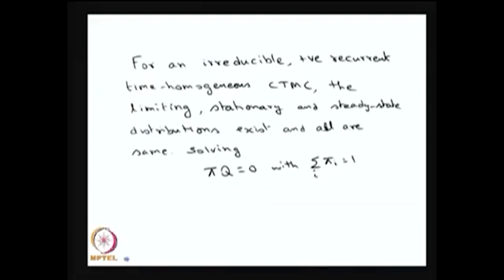For an irreducible positive recurrent time-homogeneous CTMC, the limiting distribution, stationary distribution, and steady state distribution all exist and are the same. Whenever the CTMC is time-homogeneous, irreducible, and positive recurrent, all three distributions coincide, and one can solve pi*Q = 0 together with the summation of pi_i equal to 1 to obtain the limiting, stationary, or equilibrium distribution.